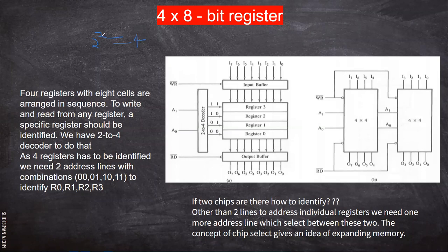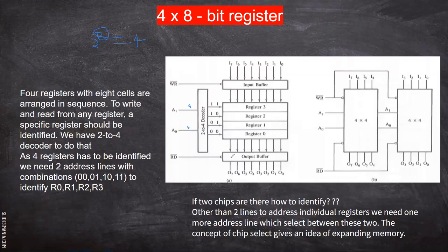With two inputs, we write two to the power two — it gives four points: 00, 01, 10, and 11. So if you give the input zero and zero, this line will be enabled and this 00 will be reflected, and the information in register zero will be selected.